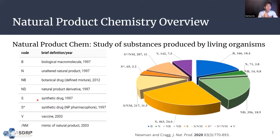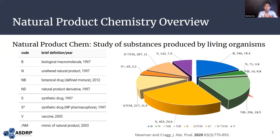Natural product chemistry is the study of substances produced by living organisms. It's important because natural products have many therapeutic advantages. Looking at this pie chart, natural product derivatives encompass about 18.9% of therapeutics in the market, while natural product mimics account for about 11.5% and 11%. Together they represent a significant proportion of therapeutics, making them essential for medicinal development.